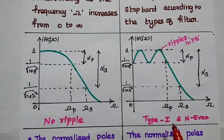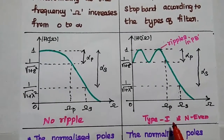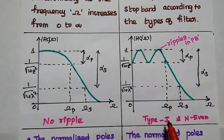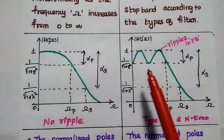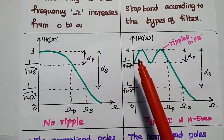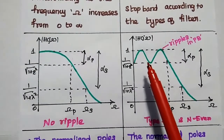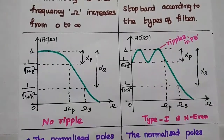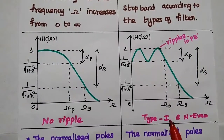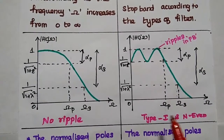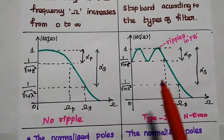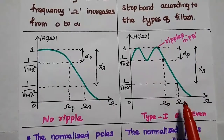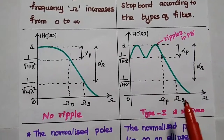Here we have considered the Type 1 filter. In the Type 1 filter, the oscillatory behavior exhibits in the passband. In the case of Type 2 filters, the same oscillatory behavior exhibits in the stopband.